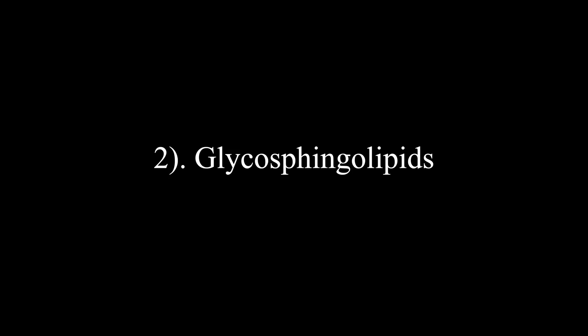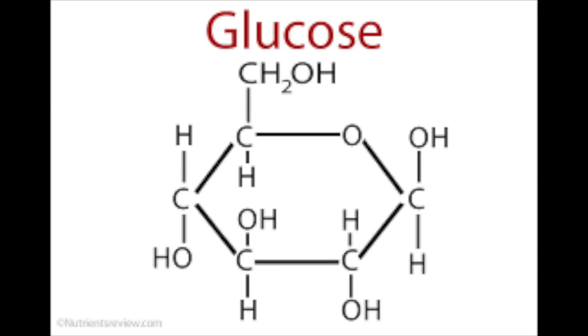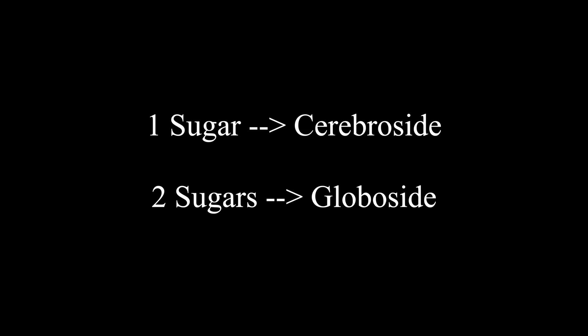So the second group of sphingolipids is called glycosphingolipids. The reason it's called this is, well, attached to the polar head group is a sugar or a saccharide. And if you have one saccharide, it's called a cerebroside.